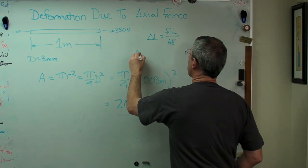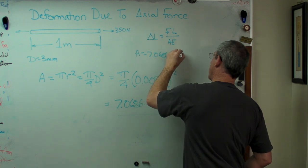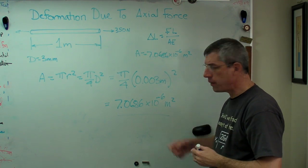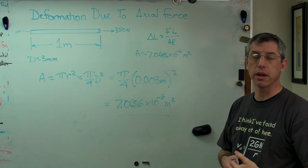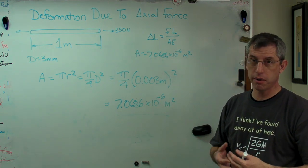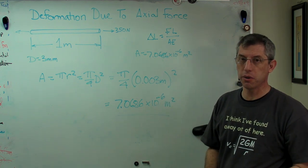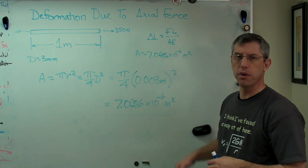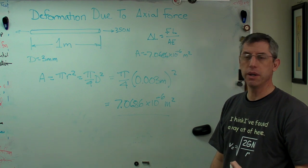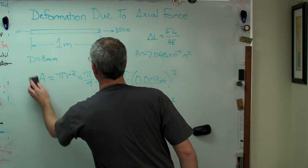That's a very small number. This is one of the things about the metric system I explain to my American students — you get really, really big or really, really small numbers as a matter of course. In the English system, a number that small would be unusual, but in the metric system you get numbers that small all the time, because a meter is about this long. Okay, so we've got the area — let's bring it home: δL = F·L / A·E.